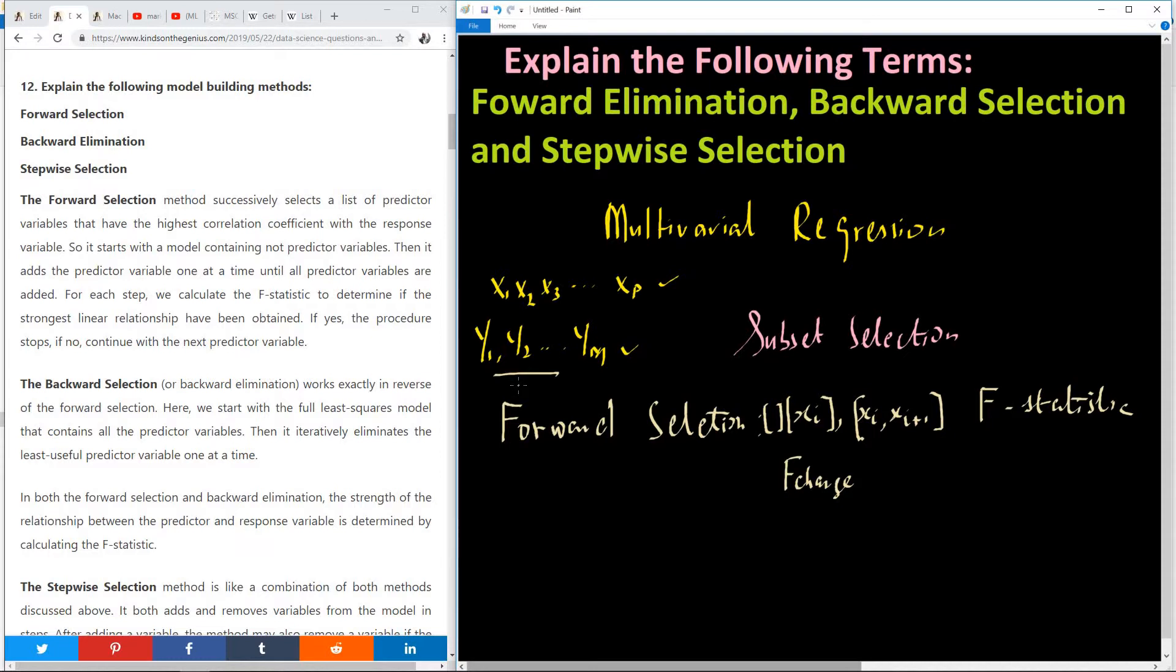In backward selection, we are working in opposite directions. So we start by adding all predictor variables. Predictor variables are simply the independent variables, that is the x-valued variables. So add all the predictor variables and gradually be removing these variables from the model, and be checking the effect it has on the model. So it's called backward elimination. So we start with a full least squares model containing all the predictor variables, then iteratively eliminate the least useful predictor variables one at a time. So how do you eliminate? You also calculate the strength of the relationship between the predictor variable and the response variable using the f-statistic that I've mentioned.